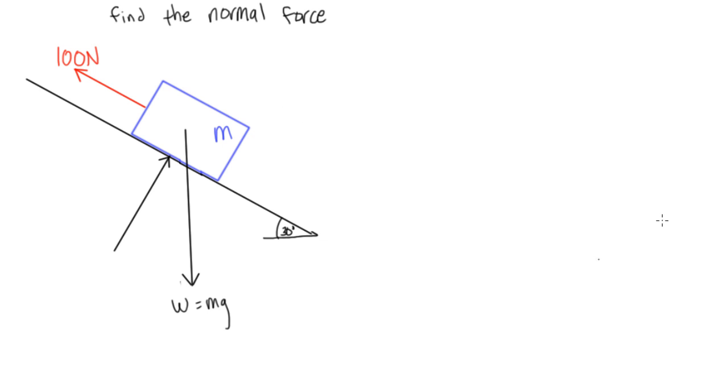So anyways, what we need to do is we only know the value of one of these, so if we wanted to solve for this being in static equilibrium, we could sum the forces in the x direction and the y direction, and you see we're going to have this normal force with some x component.